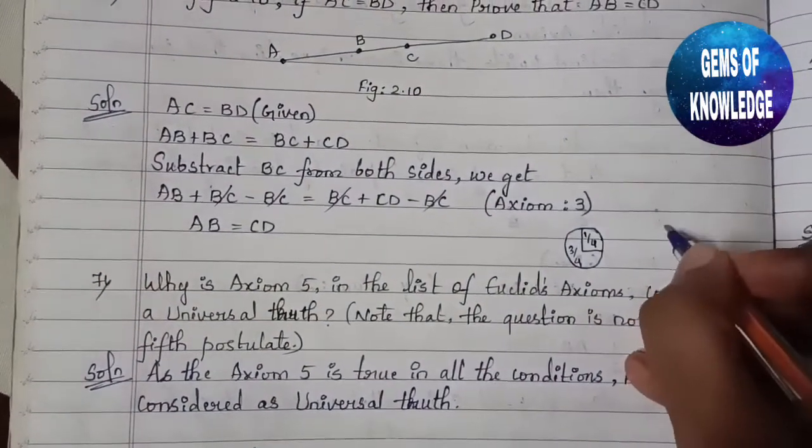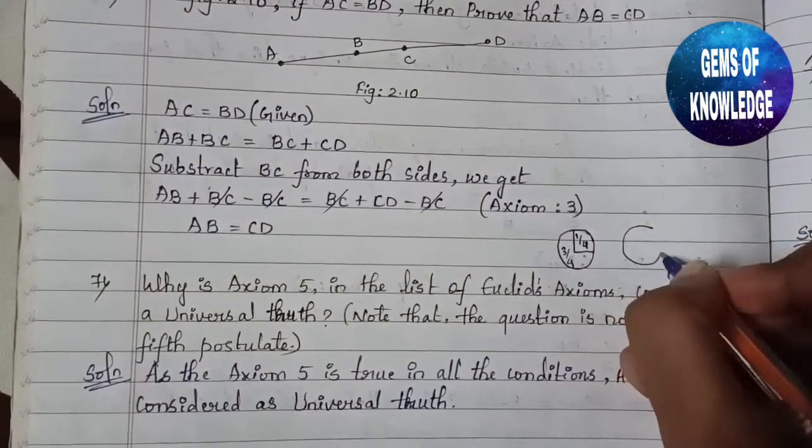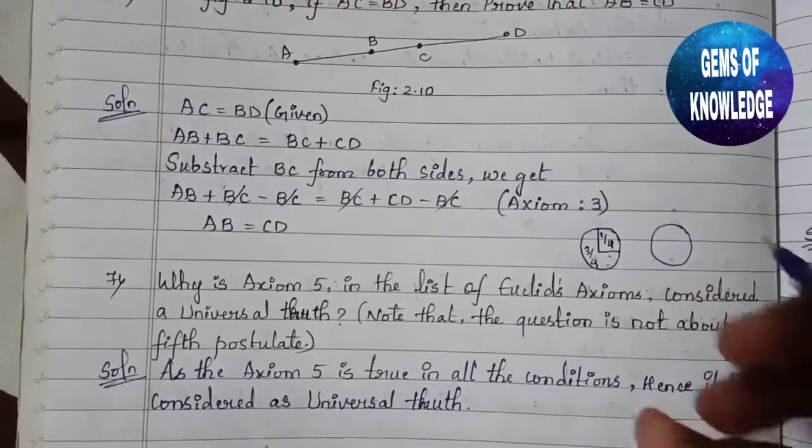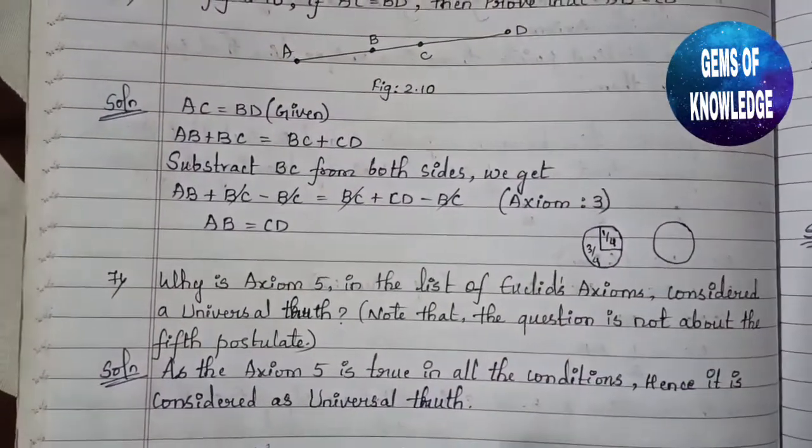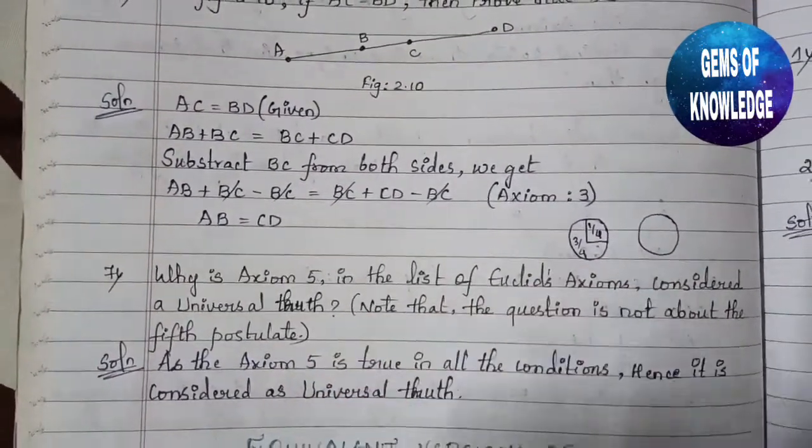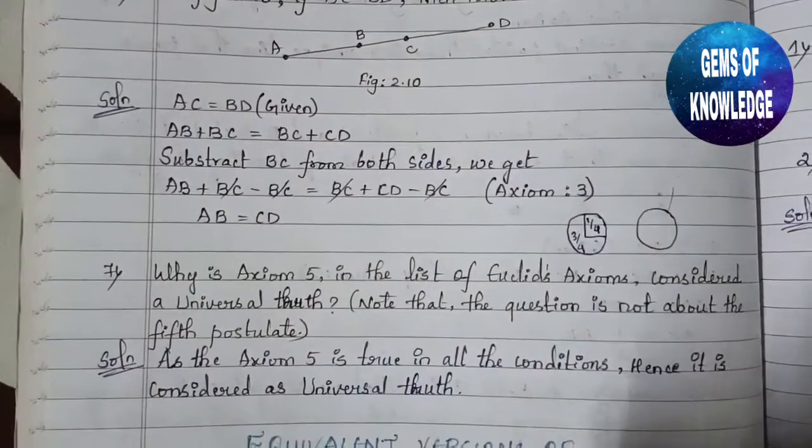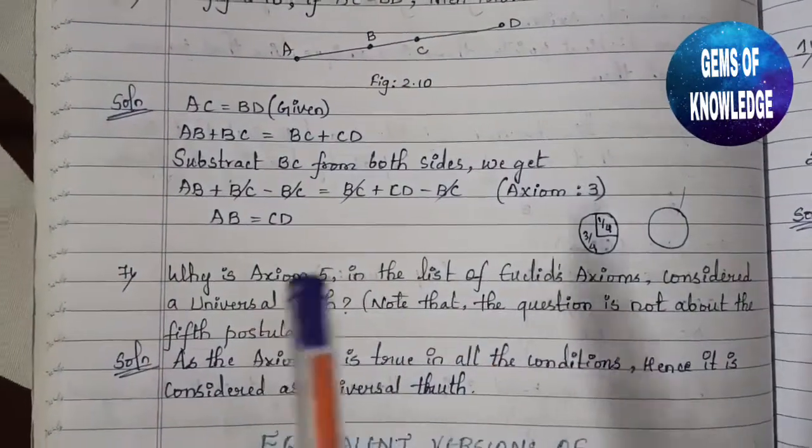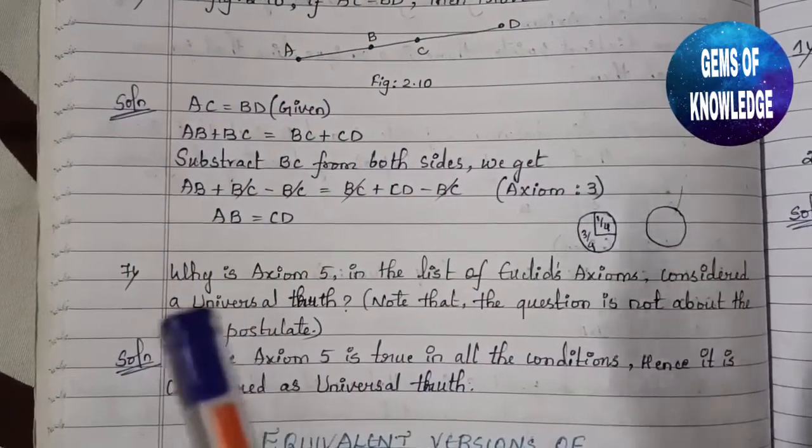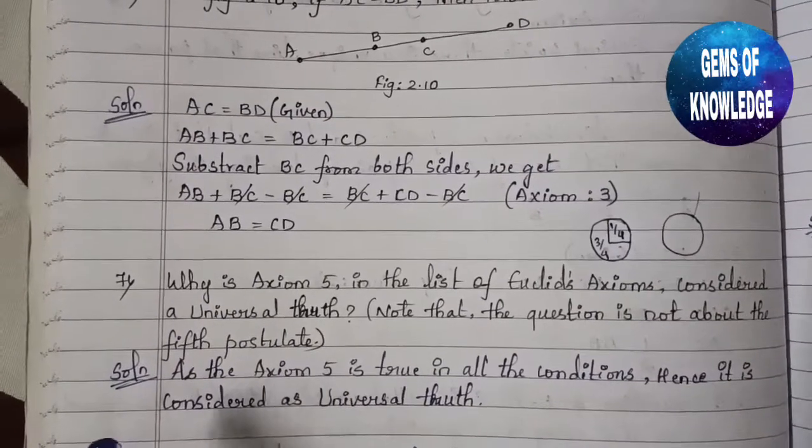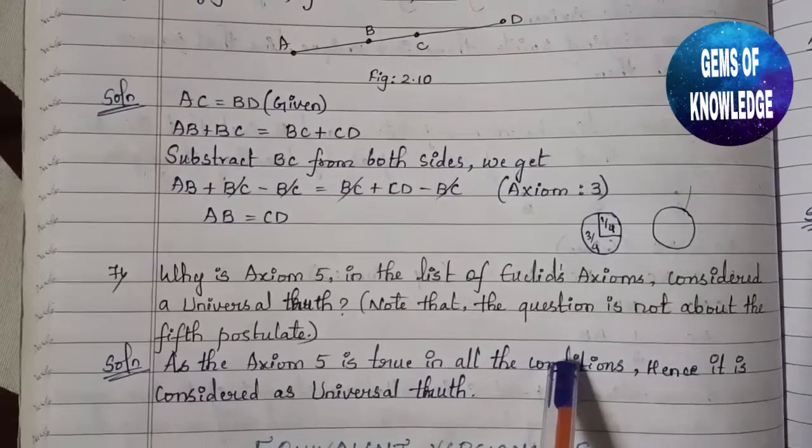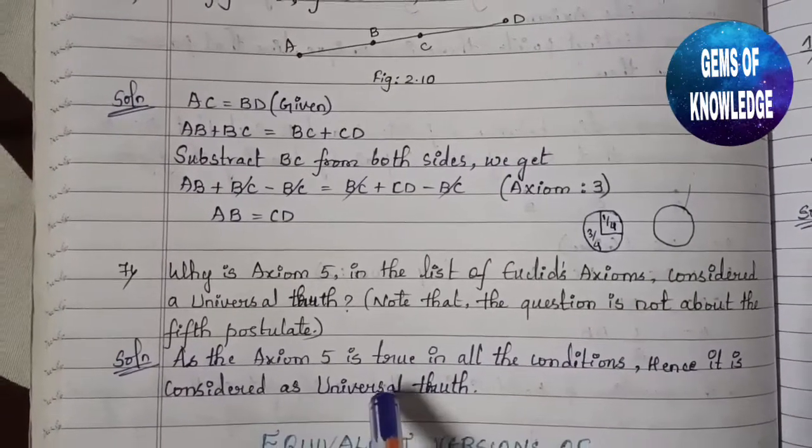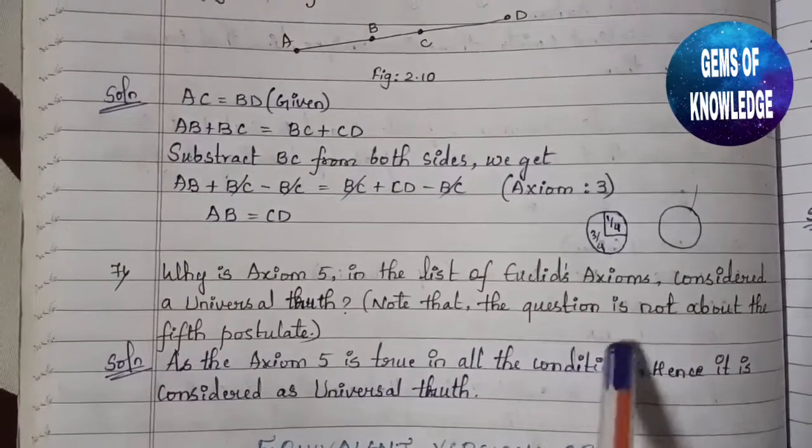Take the whole world map - if you take out India, you can say that the whole world is greater than the area of India. It will be true in all conditions. As Axiom 5 is true in all conditions, it is considered a universal truth.